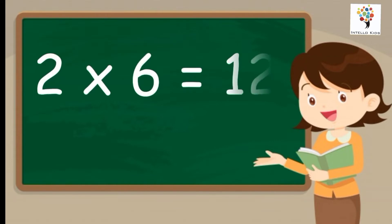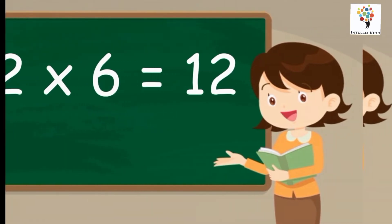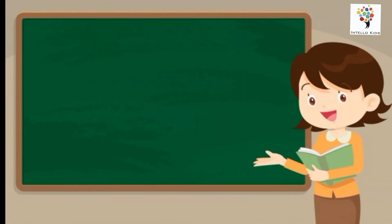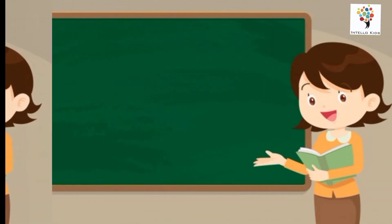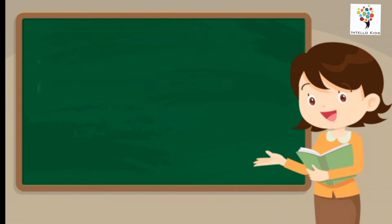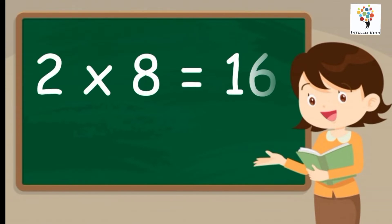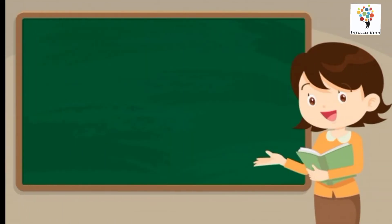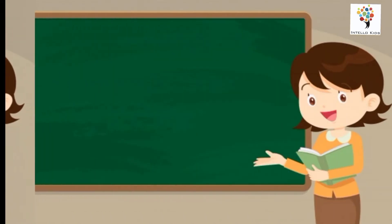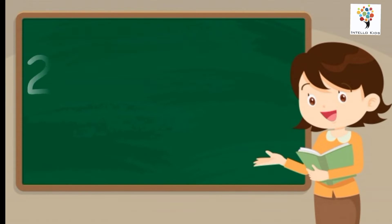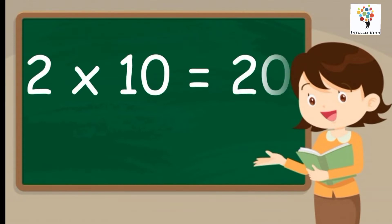Two sixes are twelve. Two sevens are fourteen. Two eights are sixteen. Two nines are eighteen. Two tens are twenty.